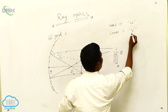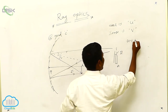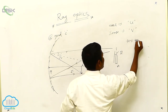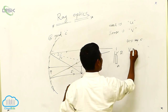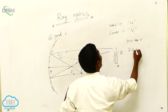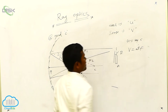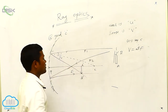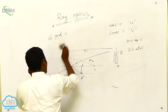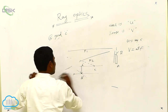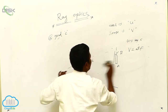See, when U is at B and C, then image — where are you getting? At F. This is the second case. Next, the third case will be there. That is most very important. Third case.